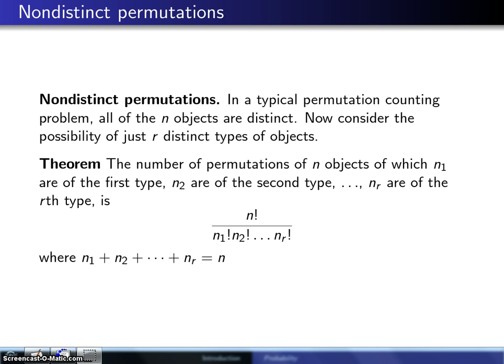In a typical permutation counting problem, all of the n objects are distinct. That is to say, in our previous example where we used enumeration, we had three distinct objects, which were the letters A, B, and C, and we wanted to take them two at a time.